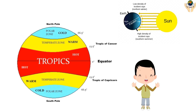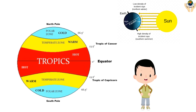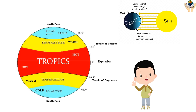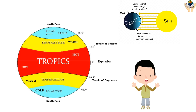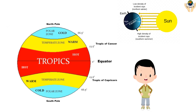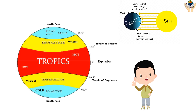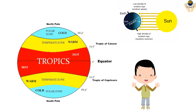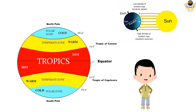Climate zone divisions divide the Earth's climates into general zones according to average temperatures and average rainfall. The three major climate zones on the Earth are the polar, temperate, and tropical zones.